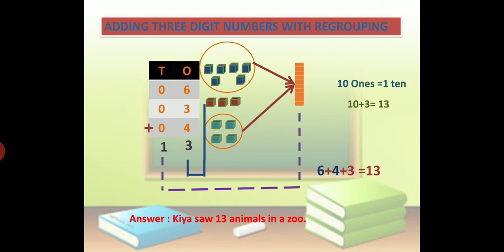Theek hai bachon? Samajh mein aagaya ki kis tarah se humein addition karna hai? Pehle 10 ka humein group bana lena hai. Jaise ki koi bada number hai, to aap aise bhi kar sakte ho ki 6 plus 4 hai to 10 hota hai, 7 plus 3 10 hota hai jo aap 1st standard mein addition seekh gaye ho. To usko dhyan mein rakhte hue aapko yeh addition karna hai to easily account kar paoge.